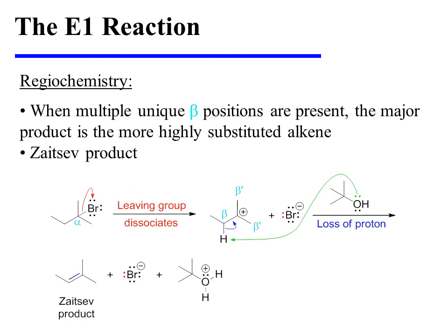When multiple unique beta positions are present, the major product is the more highly substituted alkene, which is also known as the Zaitseff product. In this specific example, the reaction begins with the dissociation of bromide from the tertiary alkyl bromide substrate. The tertiary carbocation that results has two unique beta positions, beta and beta prime. The loss of a proton from beta yields the more highly substituted alkene product, which in this instance is a tri-substituted alkene because it bears 1, 2, 3 alkyl substituents.